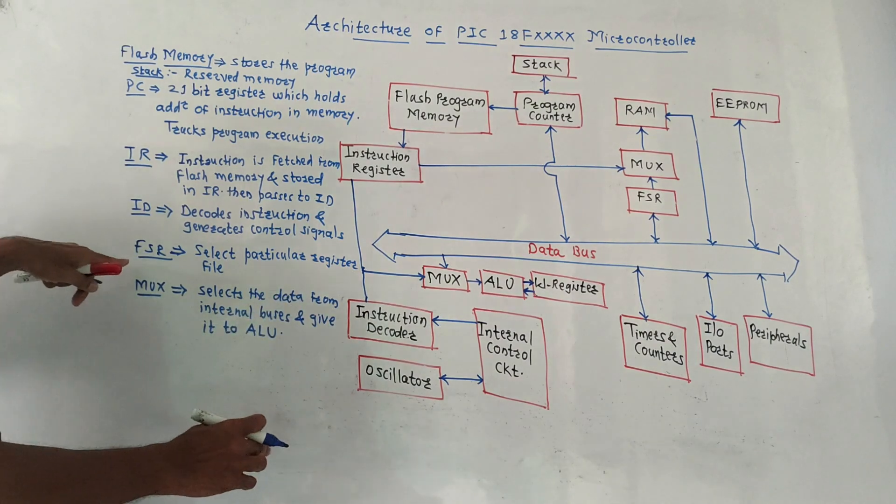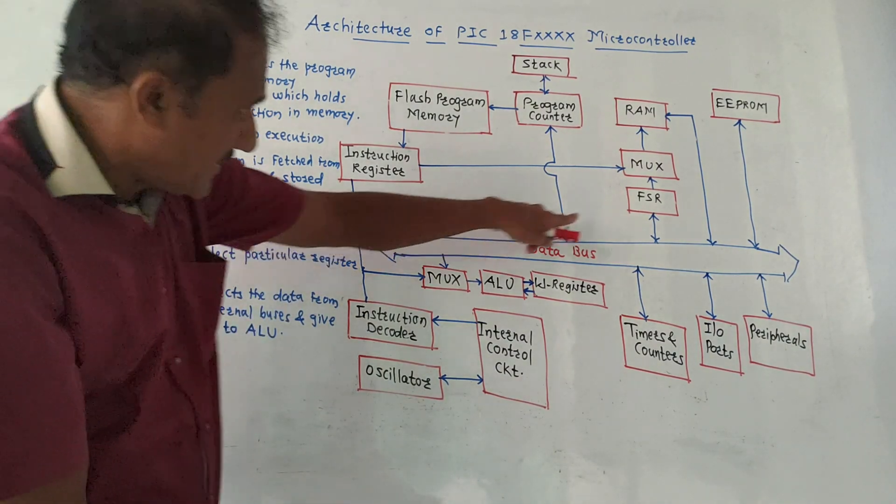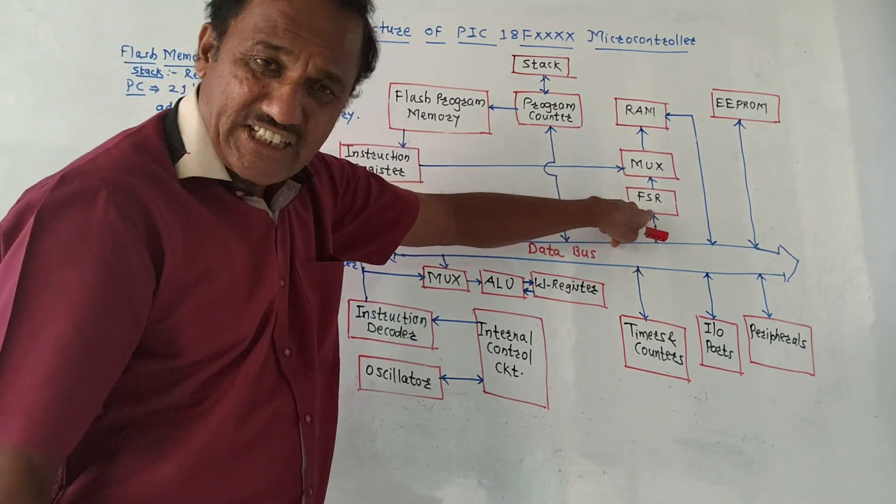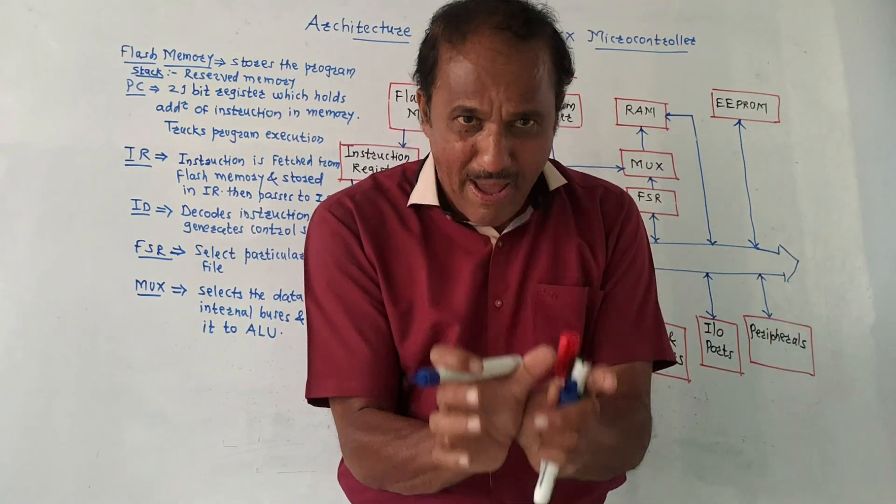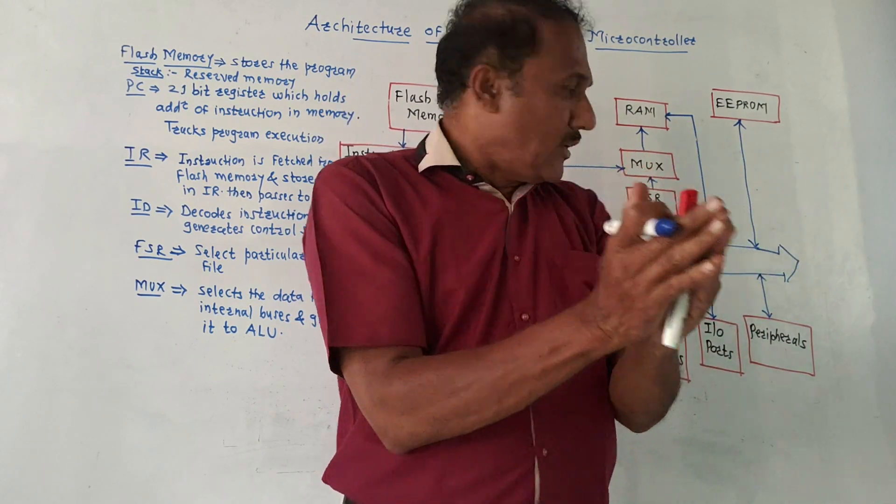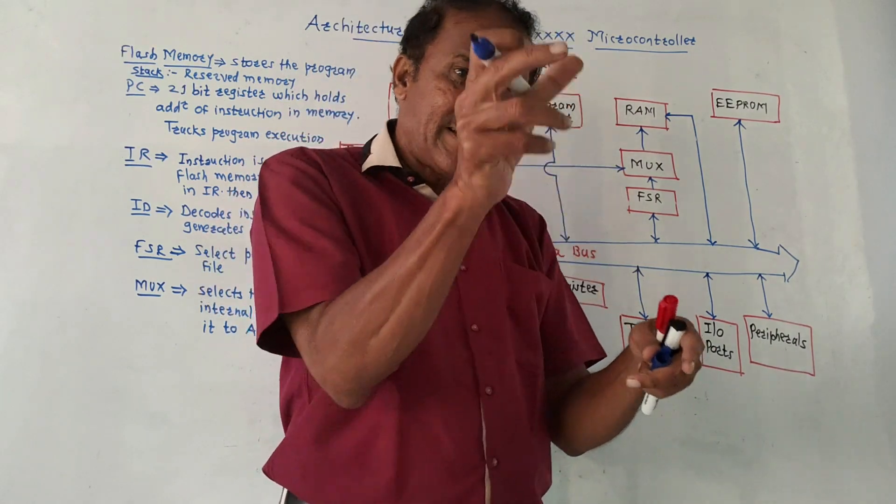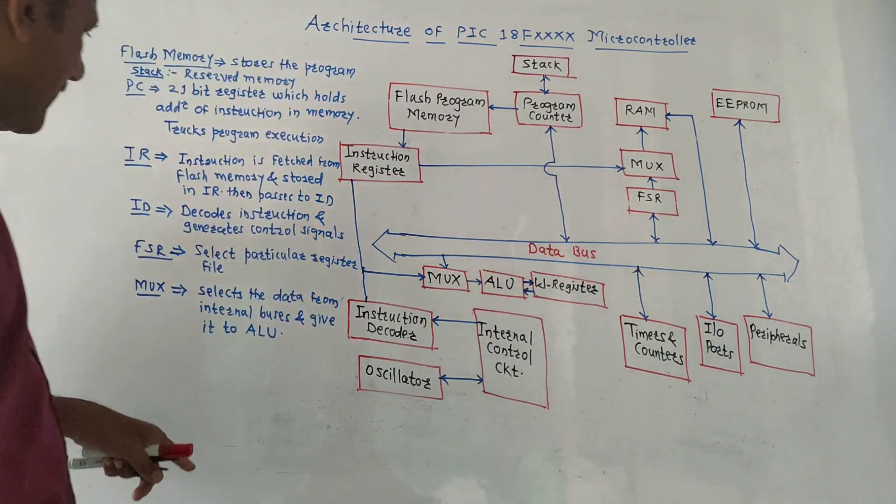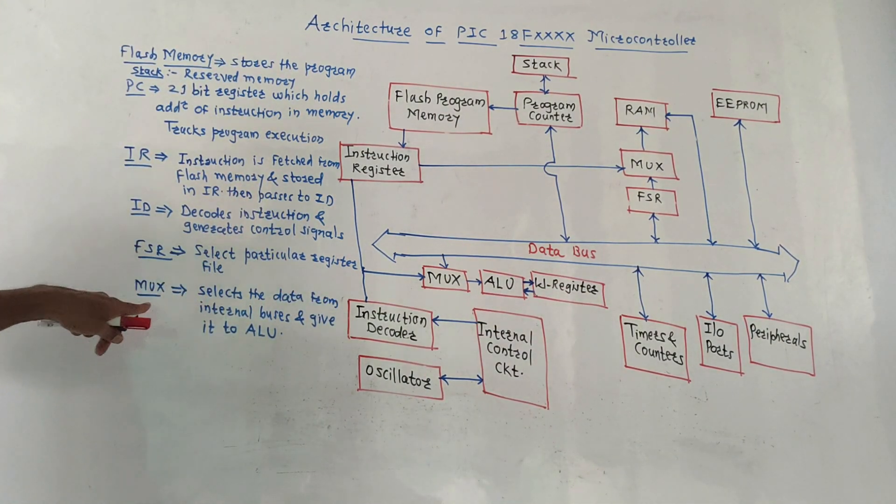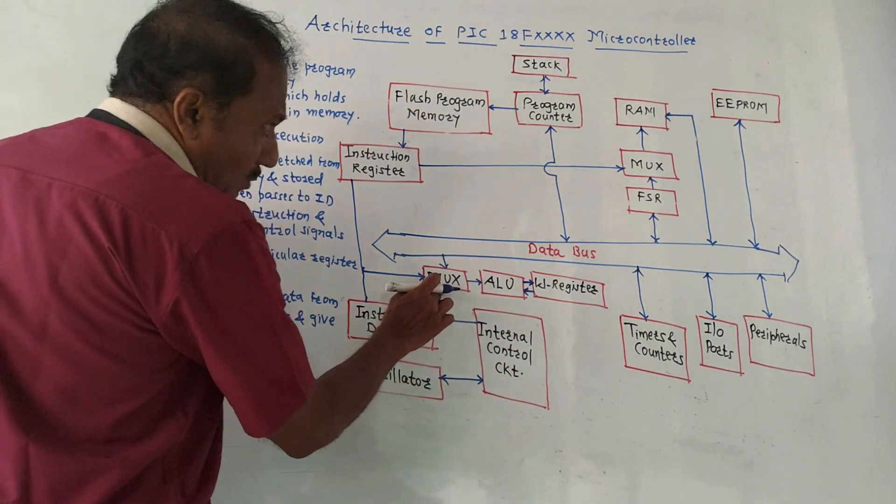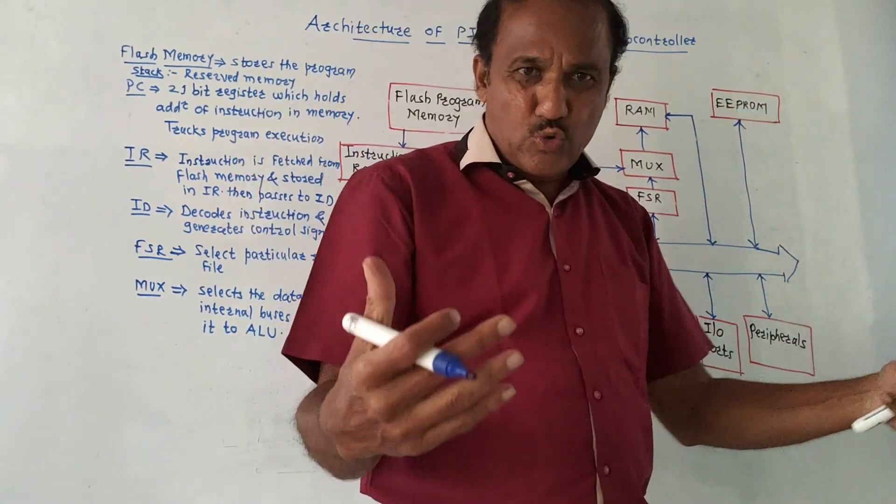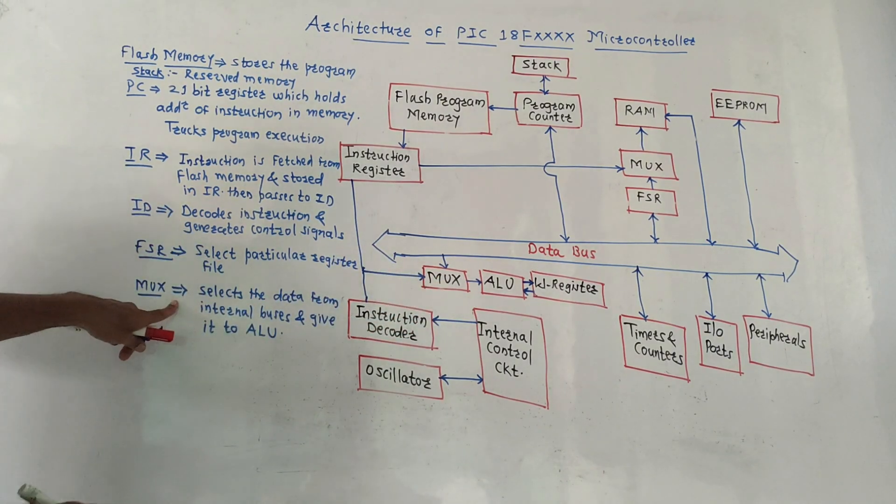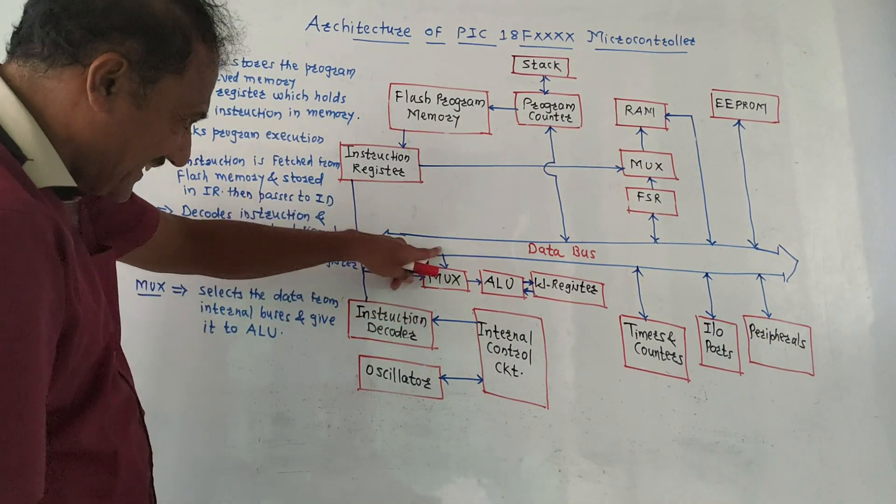Then FSR, file select register. As the name indicates, in 8051 we have different register banks. The meaning of bank means number of registers are combined together. To select a particular register bank, file select register is used. Then I have shown multiplexer at two places. The major function of multiplexer is selects the data from internal buses and gives it to the ALU.